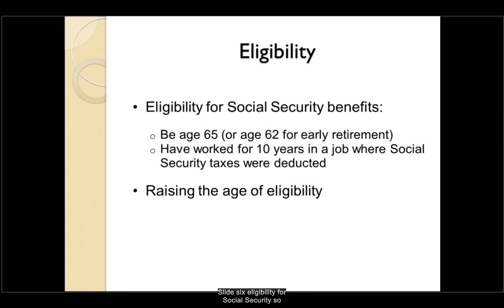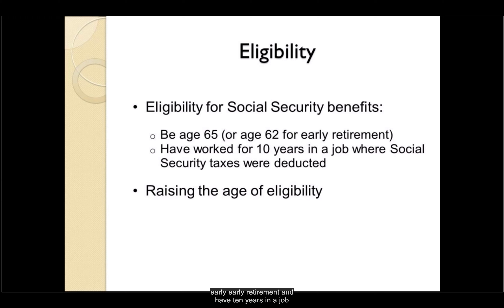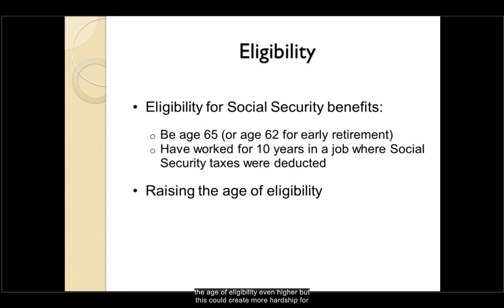To be eligible for Social Security benefits, a person must be age 65, or age 62 for early retirement, and have worked for 10 years in a job where Social Security taxes were deducted. There are discussions about slowly raising the age of Social Security eligibility from 65 to 67 over the next few years, and some people suggest raising the age of eligibility even higher. But this could create more hardship for minority groups who have a lower life expectancy than Caucasians.